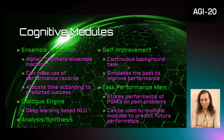The ensemble algorithm is based on Alpha's ultimate ensemble machine. It uses performance records to allocate time according to predictive success of a solution method for a problem. We will need a dialogue engine to interact with users naturally; a deep NLU engine based on transformer networks may be used here. Analysis-synthesis provides higher-order cognition for problem-solving.